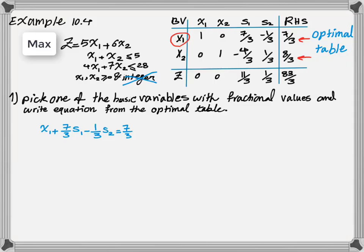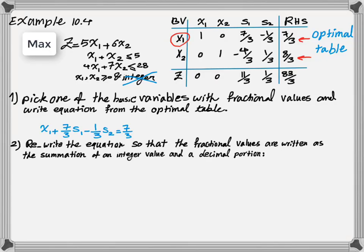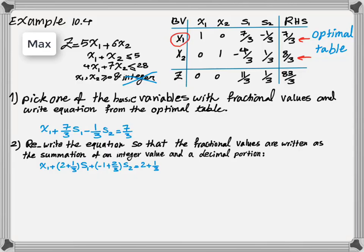If I look at the row of x1, the equation related to the first row of the optimal table will be: x1 plus (7/3)s1 plus (-1/3)s2 equals 7/3. The next step is to rewrite the equation so that fractional values are written as the sum of an integer value and a decimal portion. For example, 7/3 is written as 2 plus 1/3. So instead of 7/3 we write 2 plus 1/3, and instead of negative 1/3 we write negative 1 plus 2/3. Note that if a coefficient was positive 1/3, you would not need to write it as a sum of two parts.